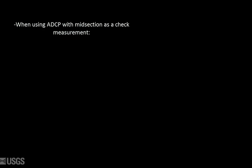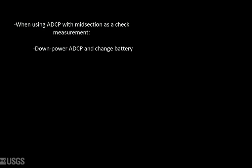When using the midsection method with the same ADCP as the original measurement, it is recommended you down power the ADCP, change the battery if possible, and configure the unit using the manufacturer's software. Also, try changing the cross section if possible.